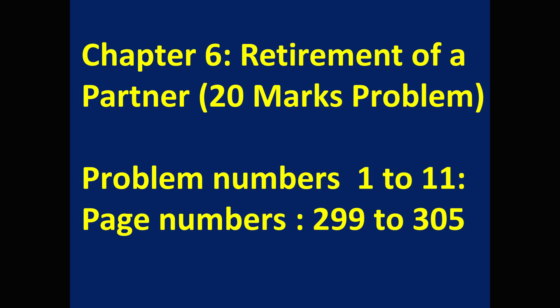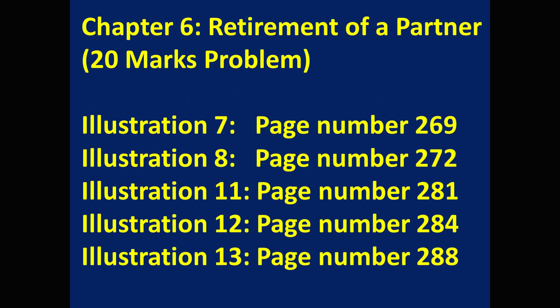Chapter 6: Retirement of a partner. From this topic, for 20 marks, one problem may come instead of from the admission topic. Important problems are 1 to 11, page numbers 299 to 305. Illustration problems: problem 7 page 271 (page 269), problem 8 page 272, problem 11 page 281, problem 12 page 284, and problem 13 page 288. This is the end of the present video. Hope this video is helpful to you. Thank you.